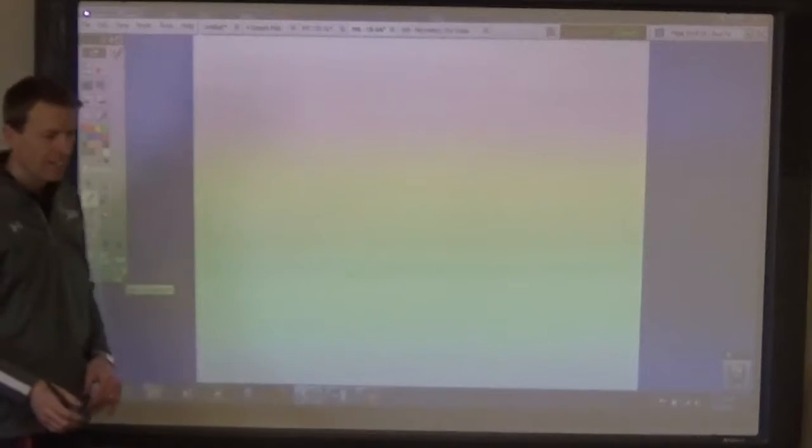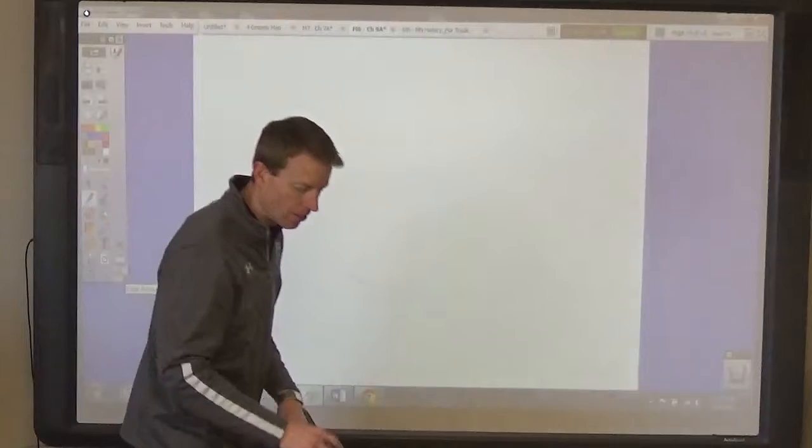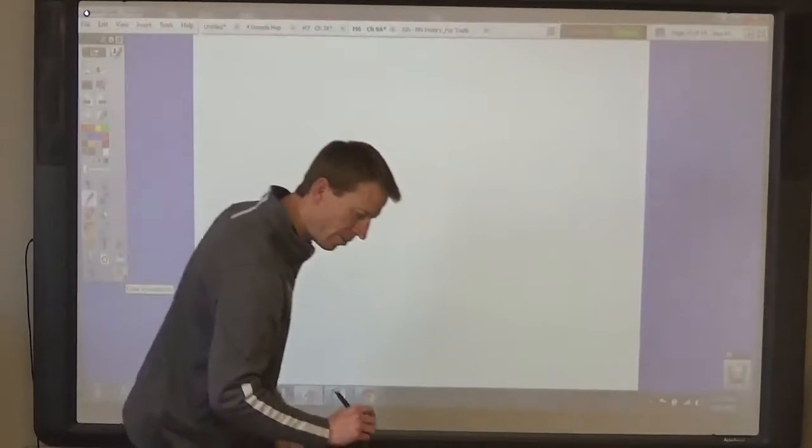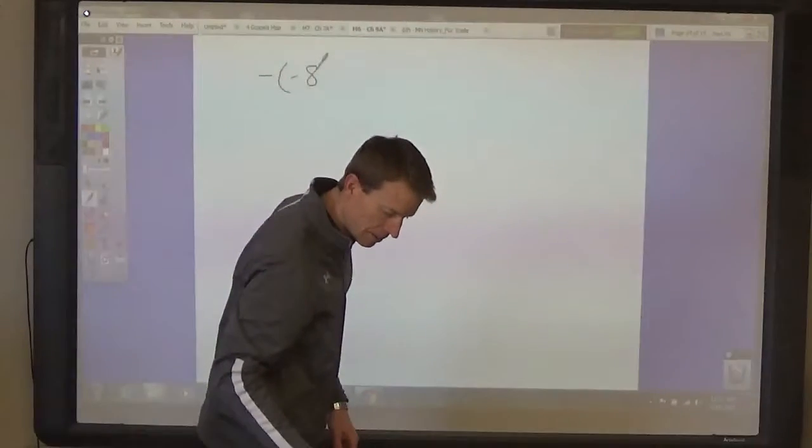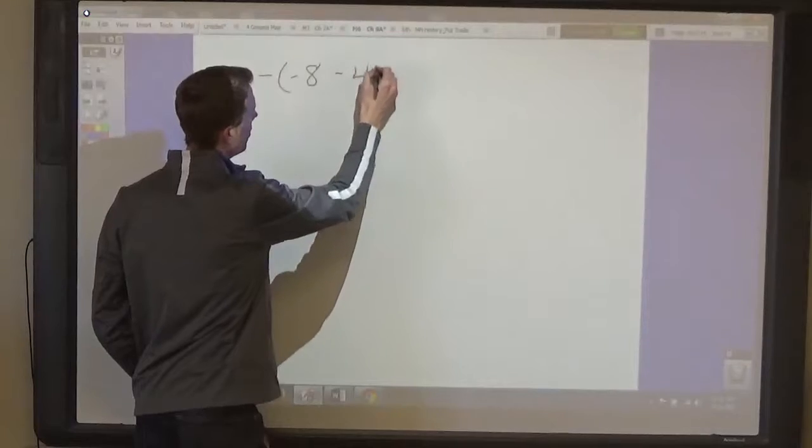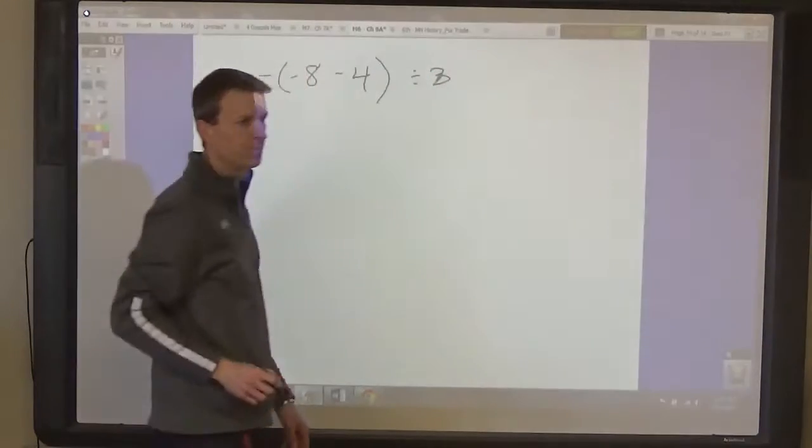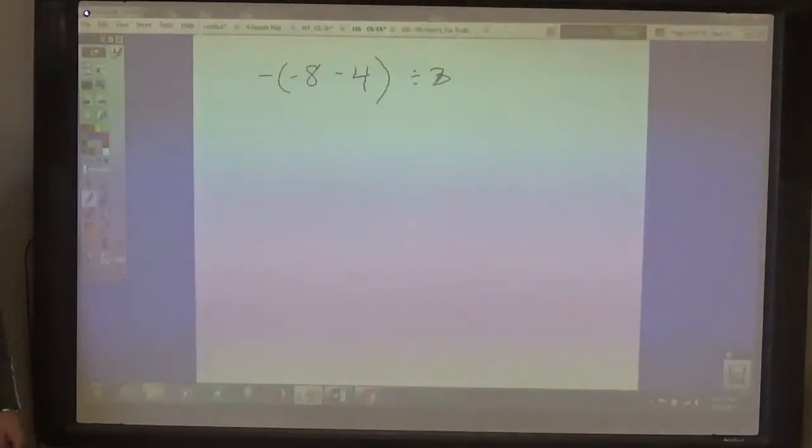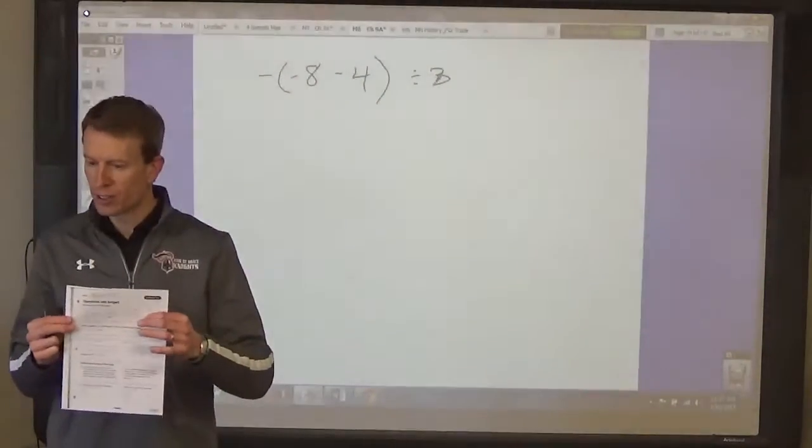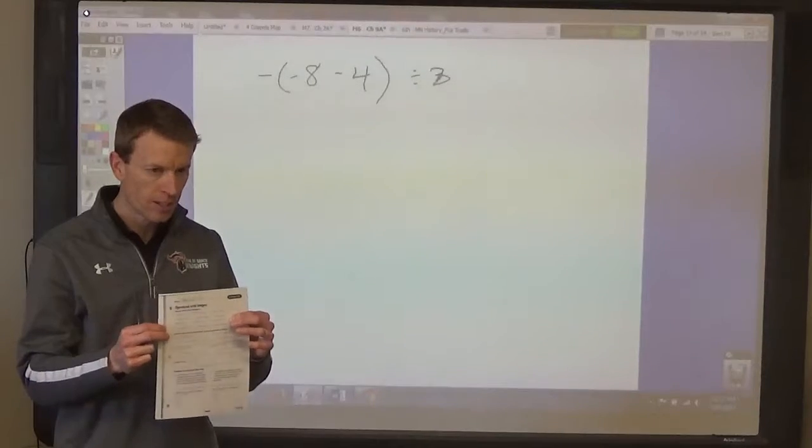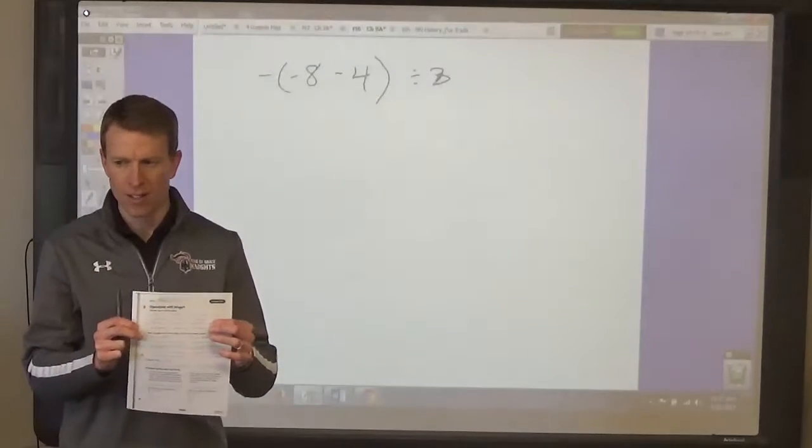Let's practice. Number one. Negative, negative. Right away they give you two negatives in a row, right? A negative, negative eight, eight minus four in parentheses divided by negative three. Now when you're working these up from the worksheet, there's not enough room to show your work. So you're going to have to take out your assignment book. No, because then you've got to keep flipping it over and back over and over again.